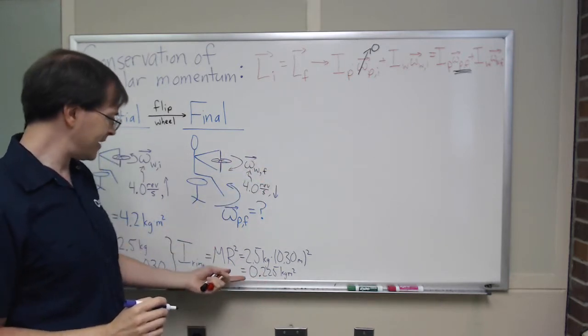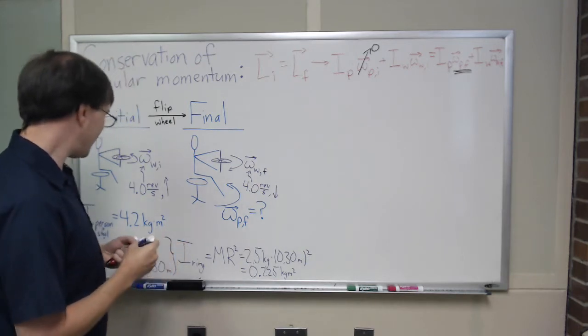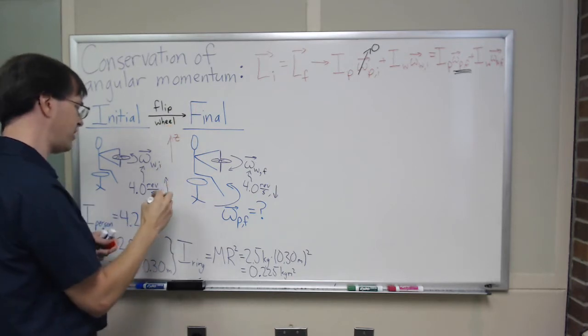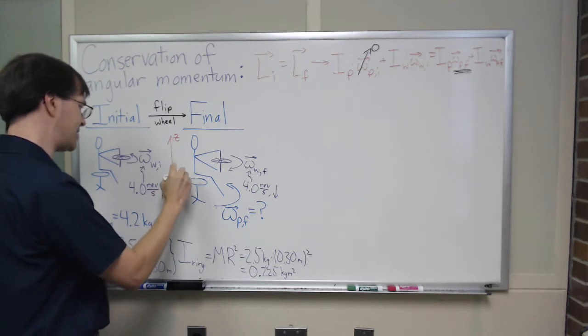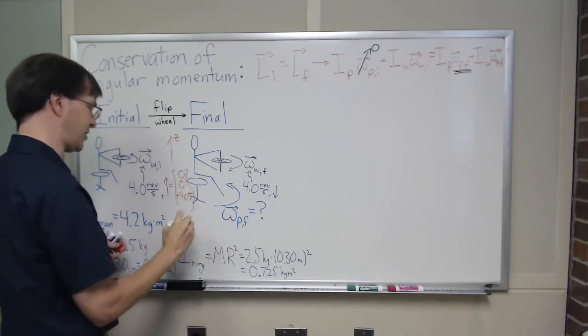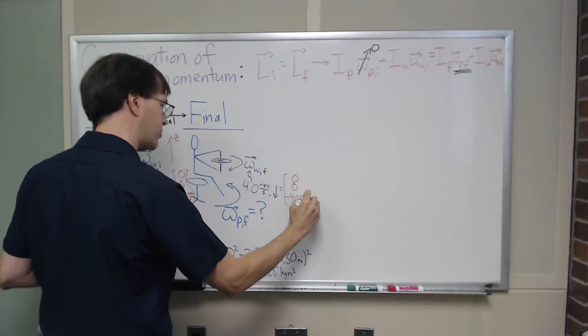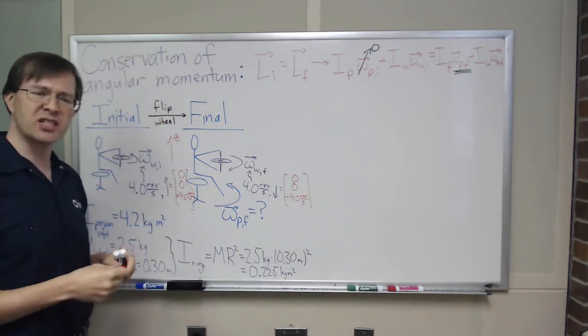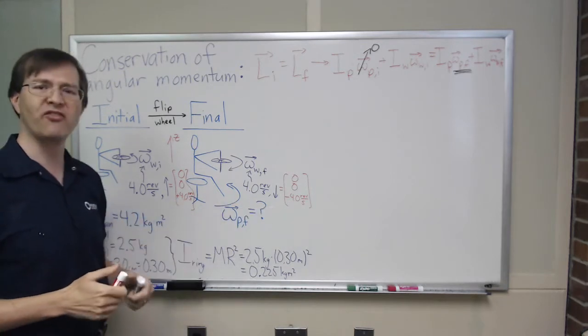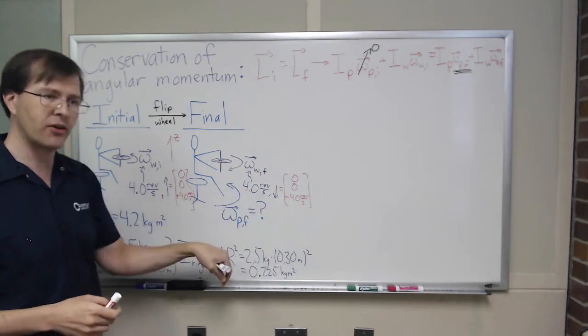I've got my story. And that means I could go over here. I guess I should also define coordinates, because if I want to think of this in a coordinate system sort of way, I could define my z direction to be upward. So this omega, I could write as 0, 0, positive 4.0 revolutions per second. Sorry, that's a square bracket. And this, I could write as 0, 0, negative 4.0 revolutions per second.